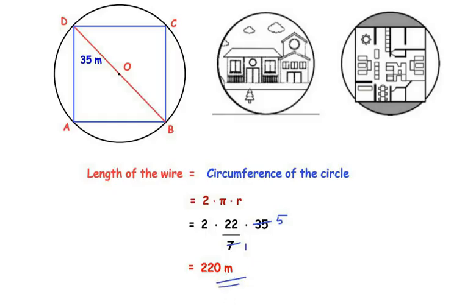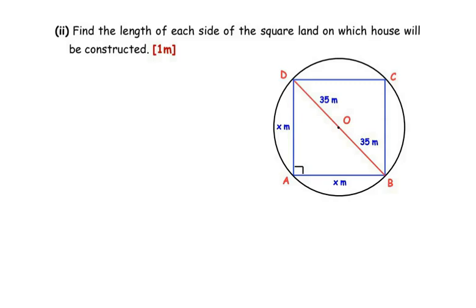Now the second sub-question: find the length of each side of the square land on which the house will be constructed. ABCD is the square and the radius is 35 meters. Here BD is the diameter of the circle and represents the diagonal of square ABCD. We need to find the length of each side of the square. Since all sides are equal, we let AB = x meters, so AD also equals x meters. We will use the right-angled triangle ABD.